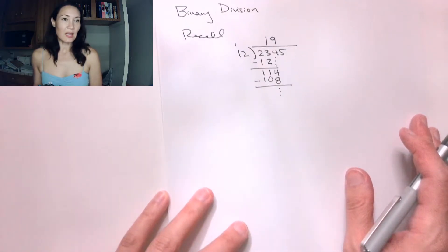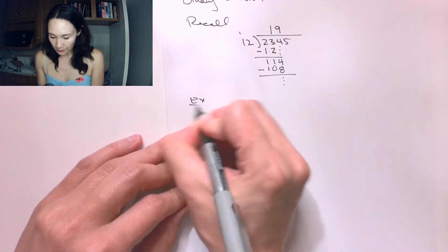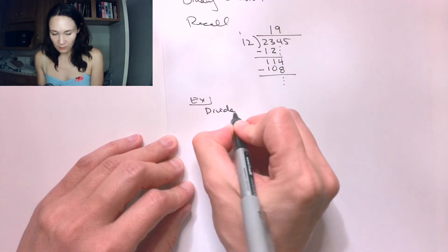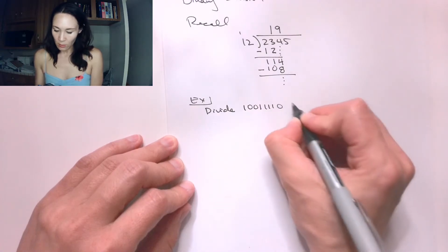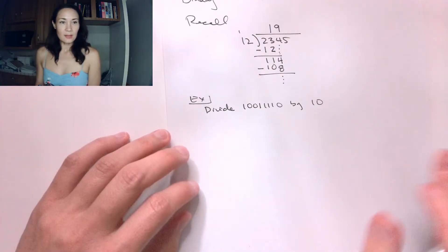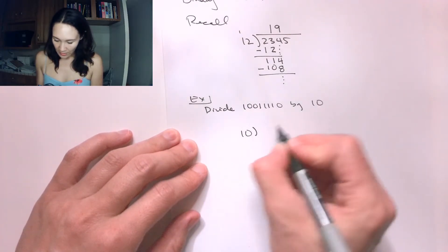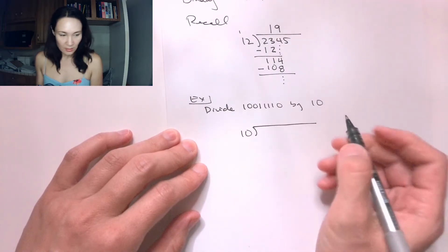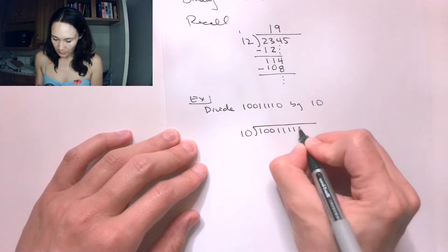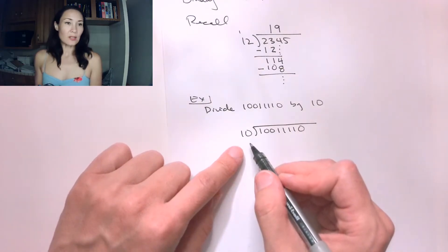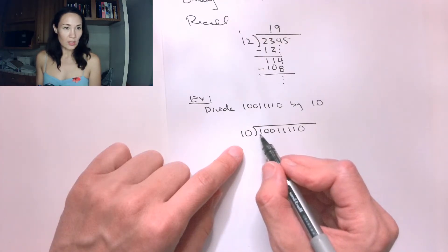Now we're going to be doing the same thing for binary division. Suppose we want to divide 10011110 by 10. So let's set up our long division just like we did in decimal. We put the 10 out here, and underneath the division symbol we're going to put 10011110. Now we ask ourselves how many times does 10 go into the first two digits, 10?